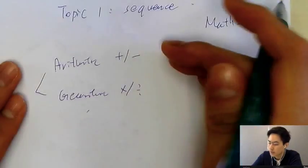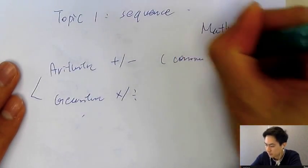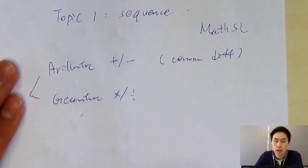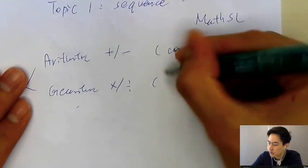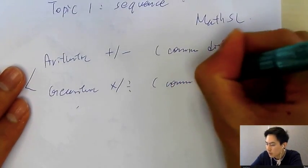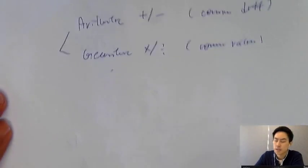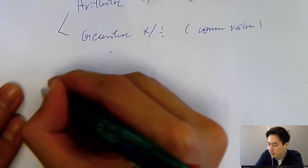For arithmetic sequence, we only have common difference. For geometric sequence, we only have common ratio. What does it mean? Let's say for this one, I have one,